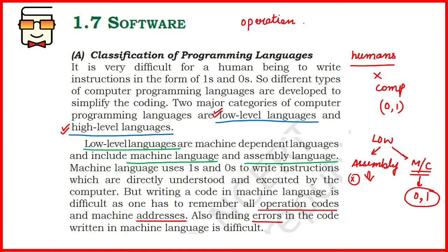Assembly language instructions are written in the form of operation codes and addresses. Operation codes are also known as op codes, as mentioned in your book. These op codes represent any operation you want to perform with data or any instruction to give to the computer — for example, if you need to push some data into a memory register, you use the command 'push' or similar keywords in assembly language.